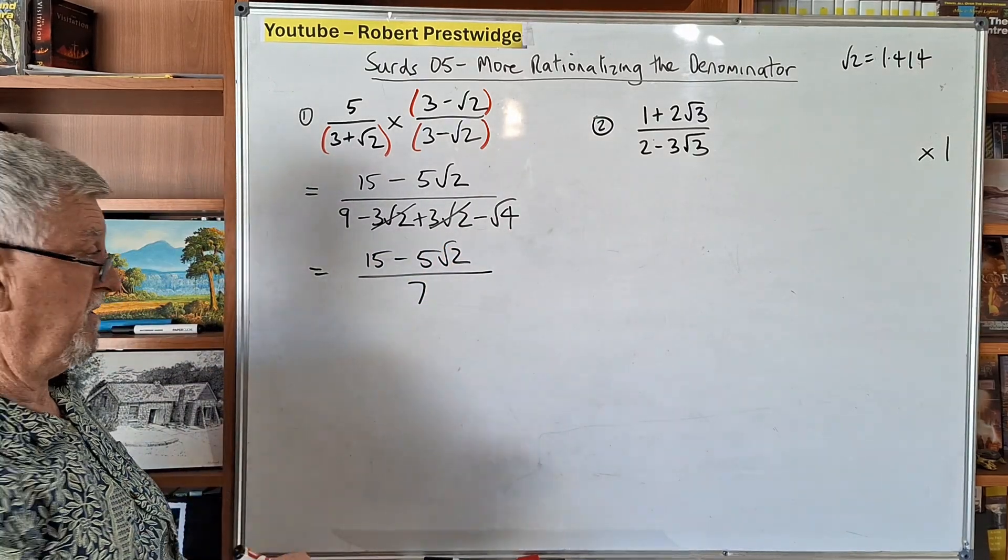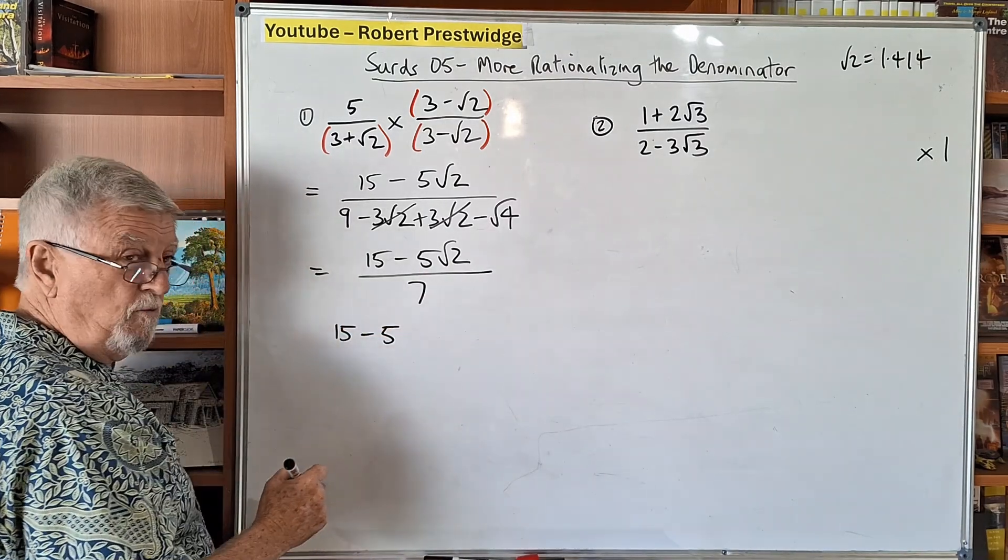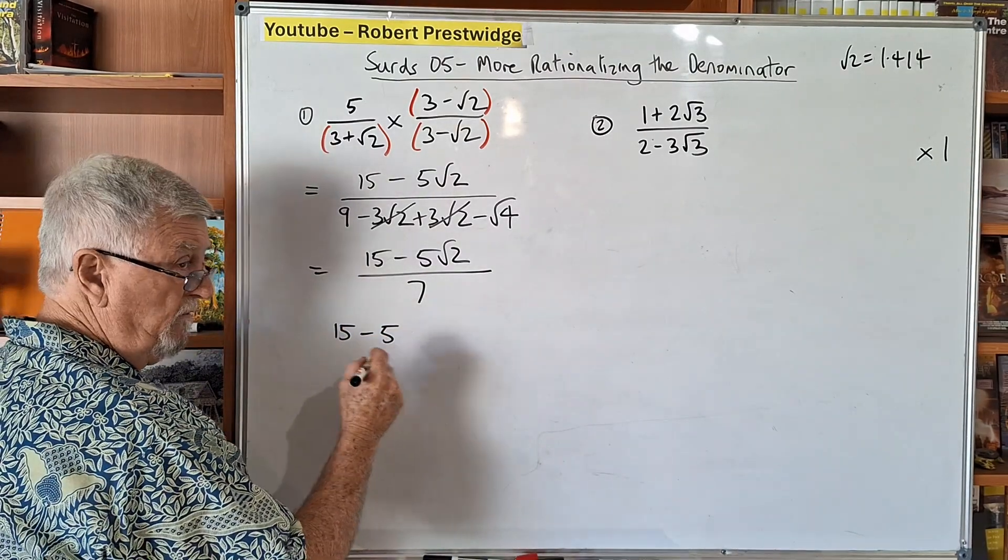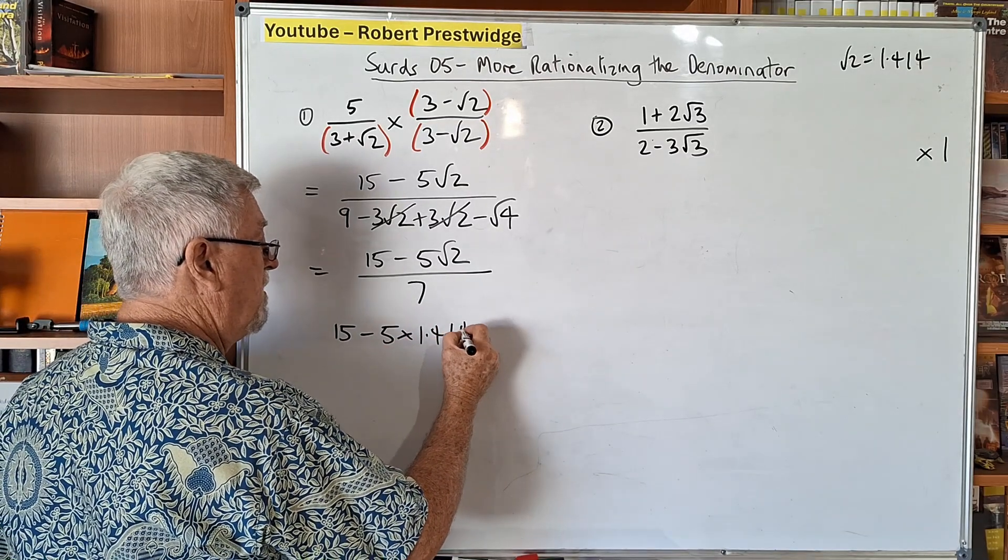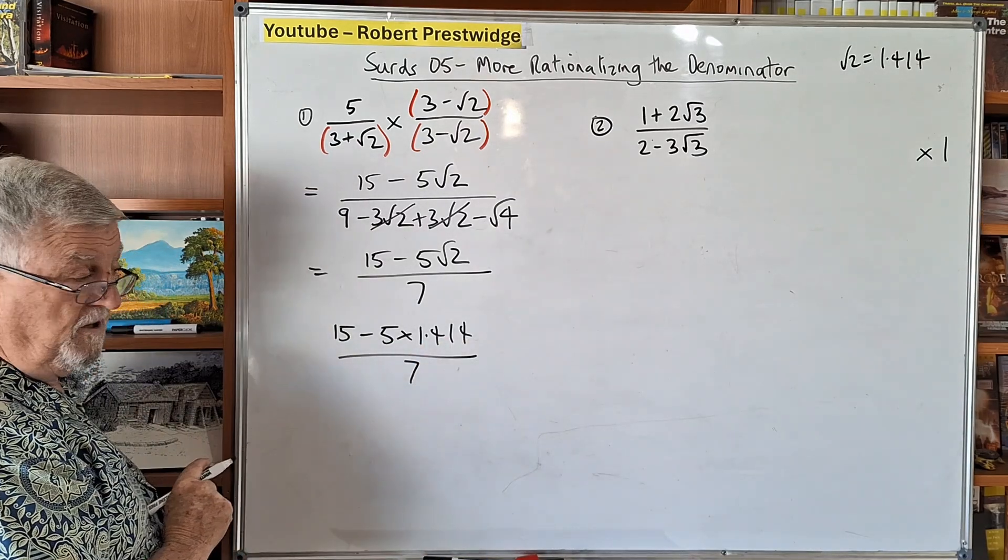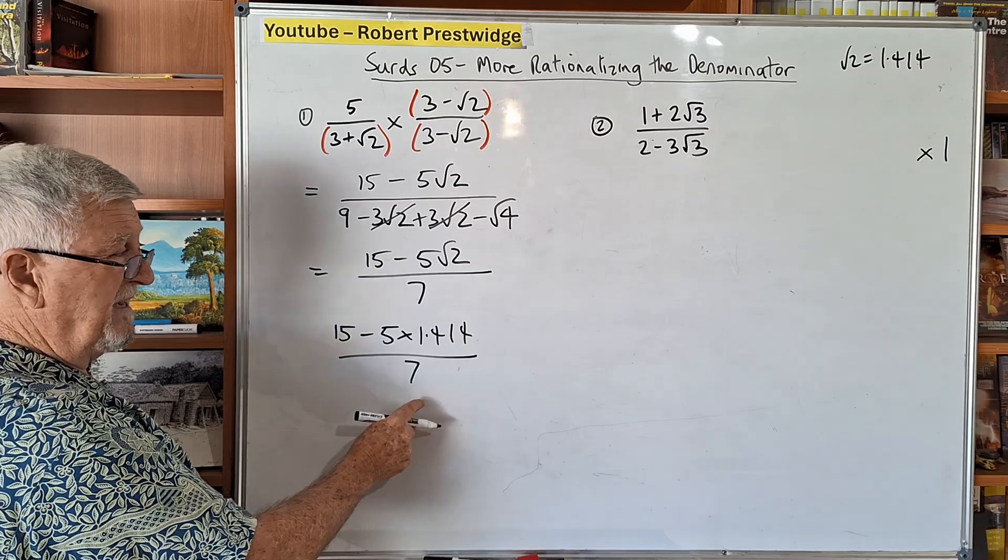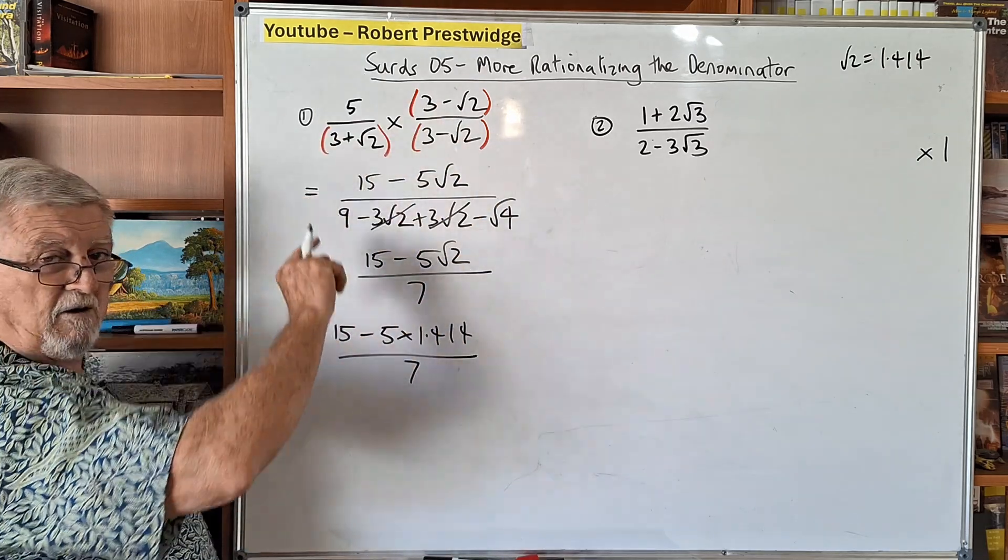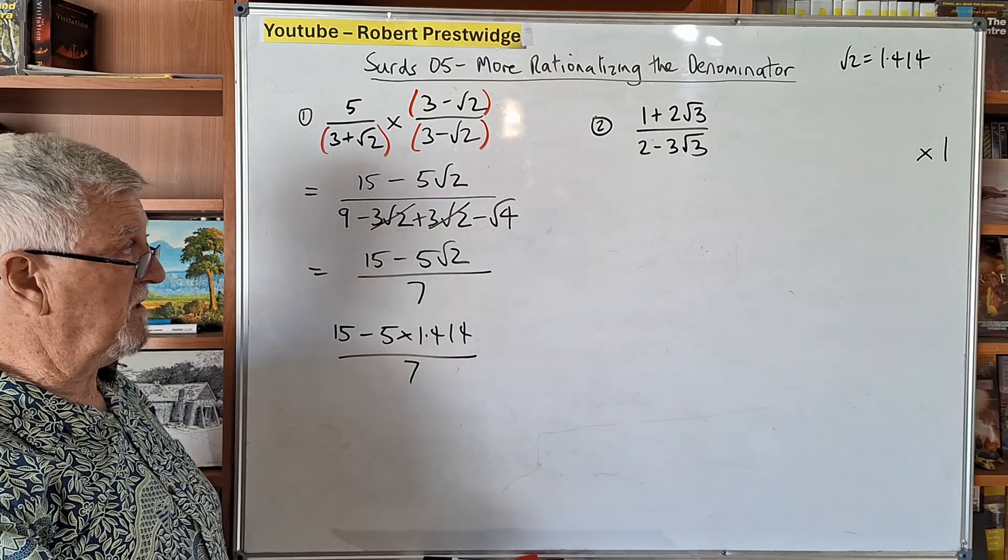I could for a moment show you, if I knew that I wanted one decimal place accuracy or more, I could say that root 2 is 1.414. And I could go through that calculation pretty easily. Subtract it from 15 very easily and divide it by 7. So it's turned it from a really revolting calculation into a really simple calculation. That's the historical basis of why we did this.